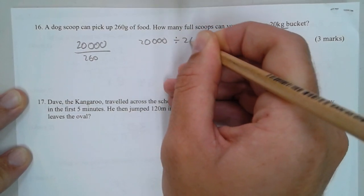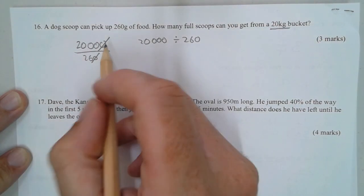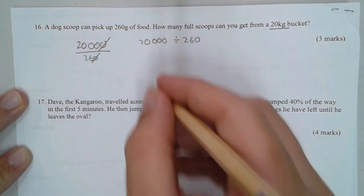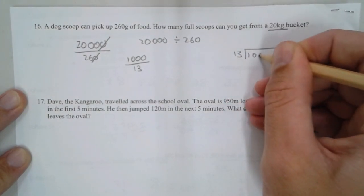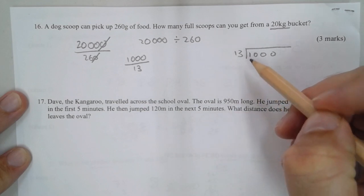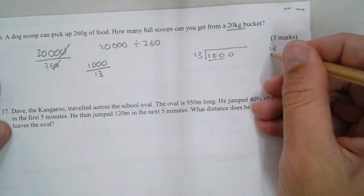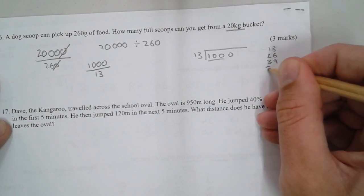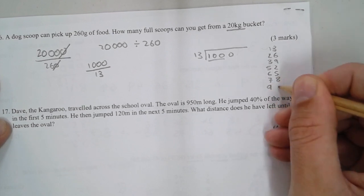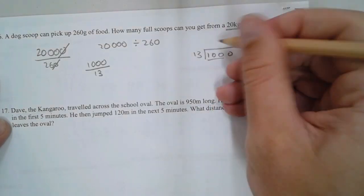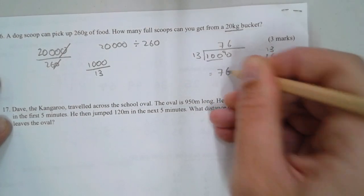That's the same as 20,000 divided by 260. If you worked it through as fractions and simplified, then halved, you get 1,000 over 13. How many times does 13 go into 1,000? 13 times 7 is 91, so it goes in 7 times with 9 remainder. It goes in 6 times there, so it would be 76.